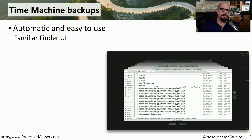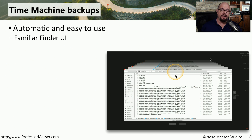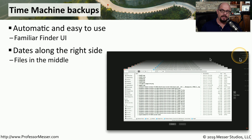Mac OS includes a backup utility called Time Machine that you can use to easily restore files if you need to recover any information. It's designed to backup your files automatically. When you choose to restore this information, it brings up a view of the Finder in Mac OS, which should be very familiar to someone using this operating system. There are dates along the right side that you can use to go back in time, find exactly the right date you'd like to restore from, click one button, and restore that particular file.